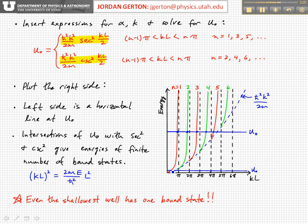That might be surprising, but that's what these solutions tell us is that no matter how shallow we make the potential, that is no matter how small we make U naught, or how narrow we make it, that is as L gets closer to zero, we always have one bound state.